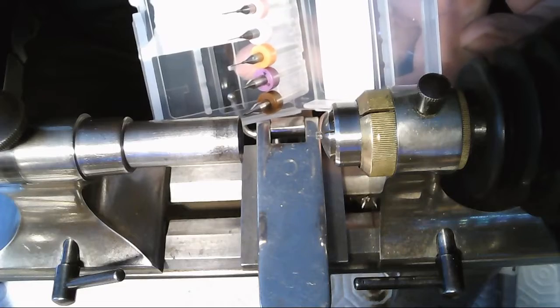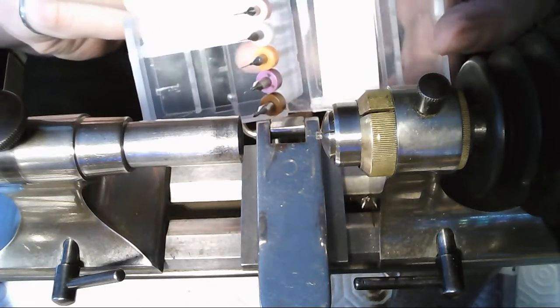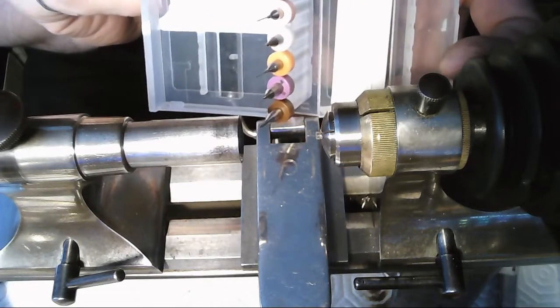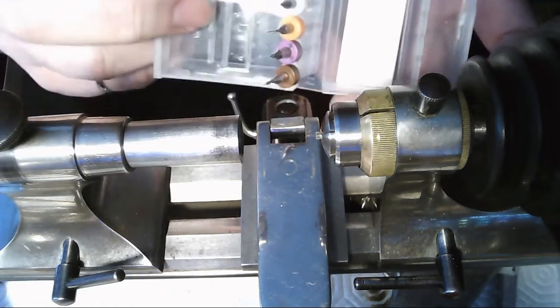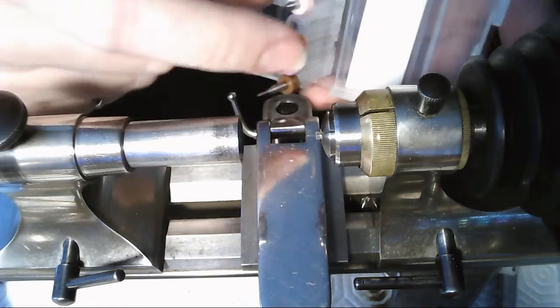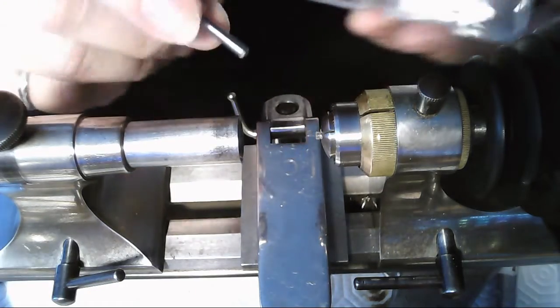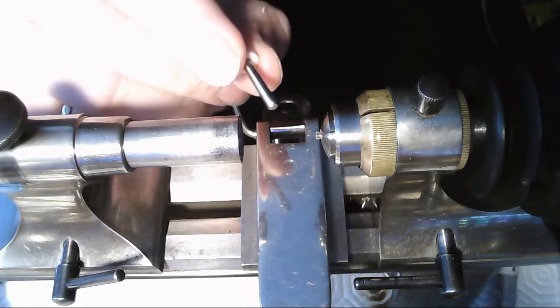These drill bits are high speed steel. They're actually for circuit boards but they come really small. So the pink one looks like the one I need to use. So what I'll do is grab the pink one, that pink one.